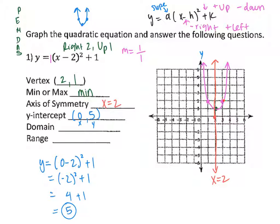The domain for parabolas: because it has an arrow pointing left and an arrow pointing right, it keeps extending in both directions — from negative infinity to positive infinity. You can write it that way, or just write it as all real numbers, because for all quadratics the domain is always all real numbers. The range is the lowest y value to the highest. The lowest y value here is 1, with a bracket since it's a closed point. The highest has arrows pointing up, going to positive infinity.